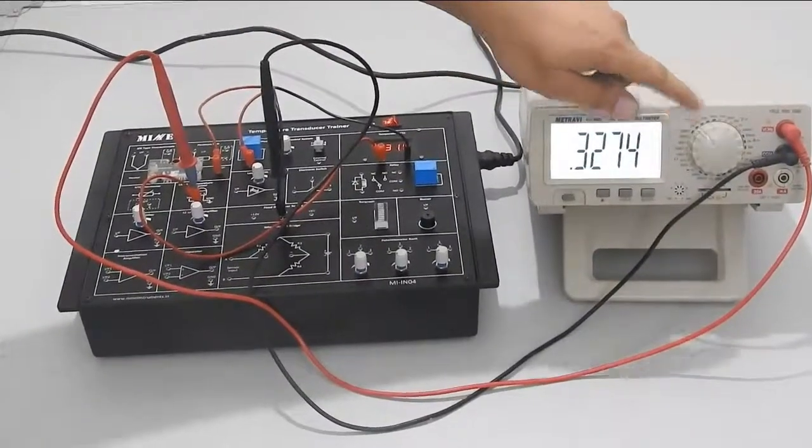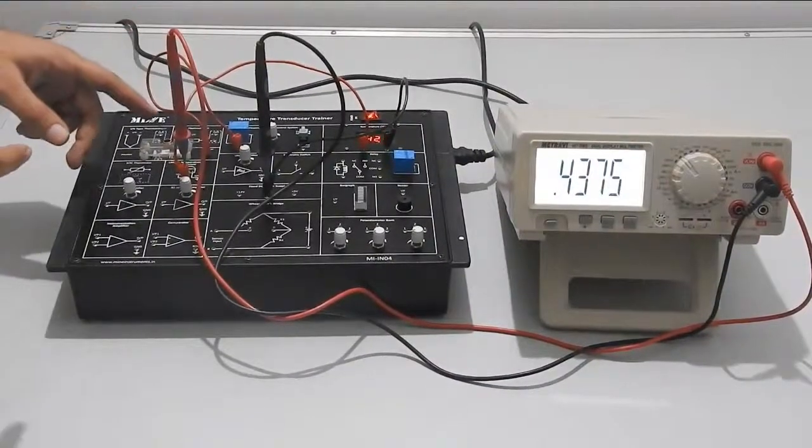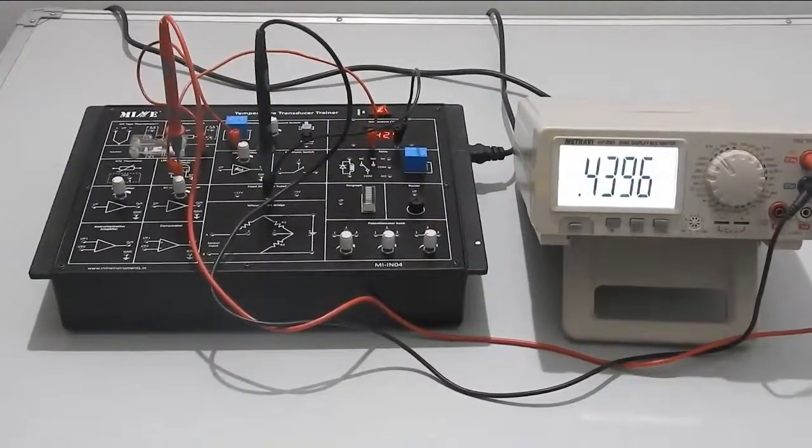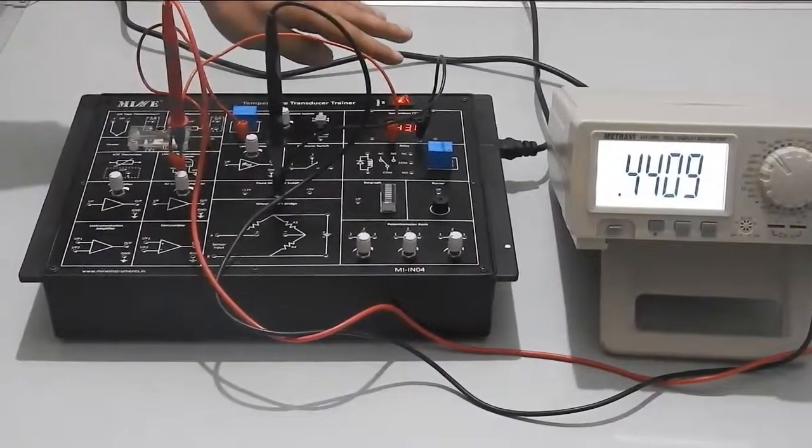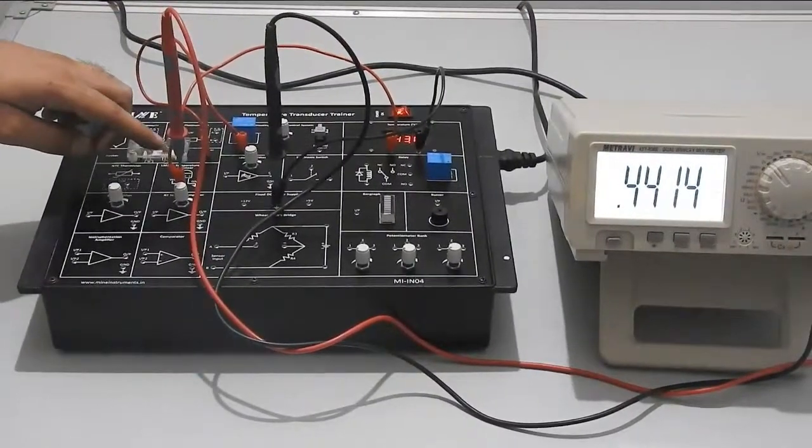The multimeter is set on 2 volts. Output voltage of the temperature sensor is shown by the multimeter and we can see that the output voltage is a function of temperature. As temperature increases, the voltage of the sensor also increases.